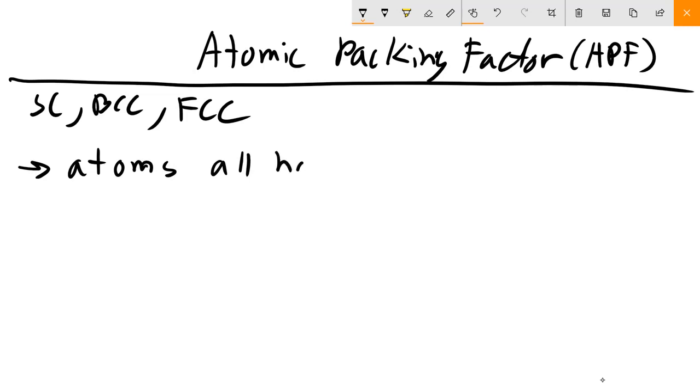If we have atoms that are all the same size, so if the atoms all have radius R, then the maximum APF is a magic number of around 0.74. This is just a geometric identity.